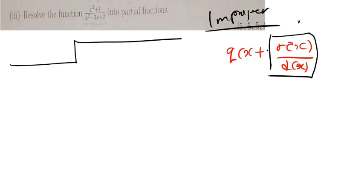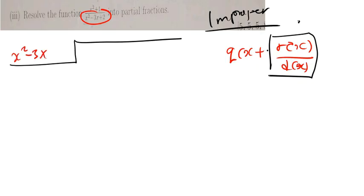So which one do we put on top and which one do we put down? This is self-explanatory because we are dividing this by that. So the dividend is x² plus 0x plus 1, and the divisor is x² minus 3x plus 2. Because after x² there is x, I include a placeholder and write 0x plus 1.